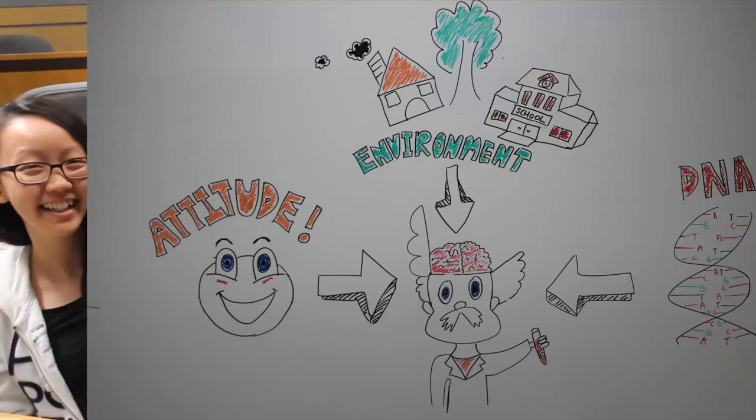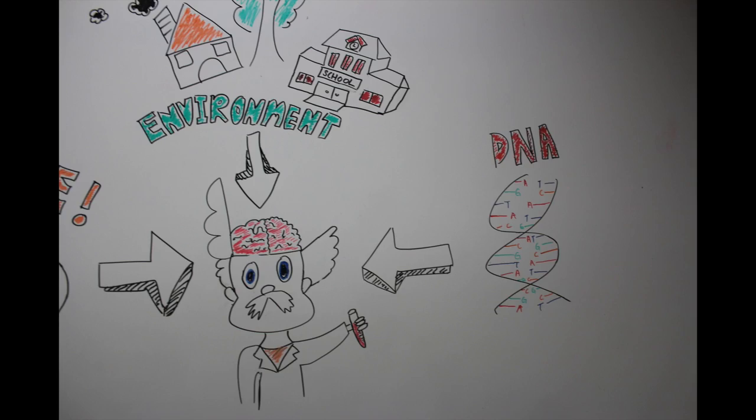Now, let's recap what we found out during our research. Just like what many of our friends thought, intelligence is affected by three factors: our genes, our attitude, and our environment.